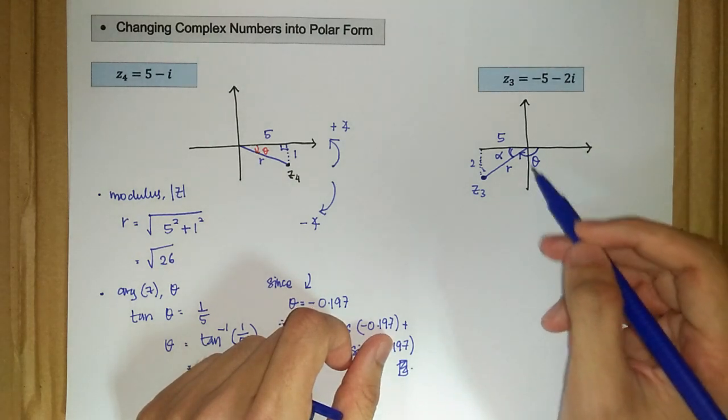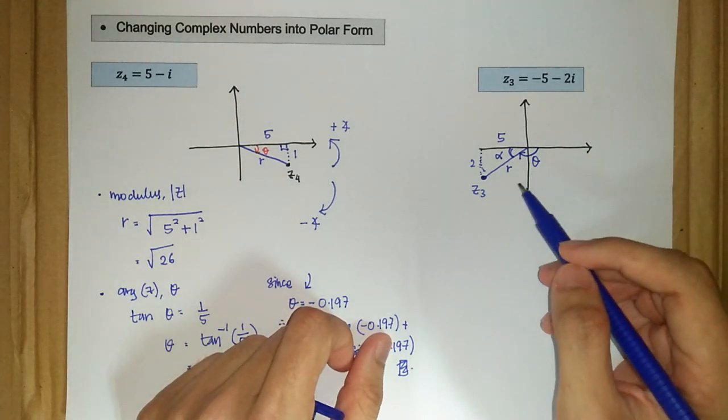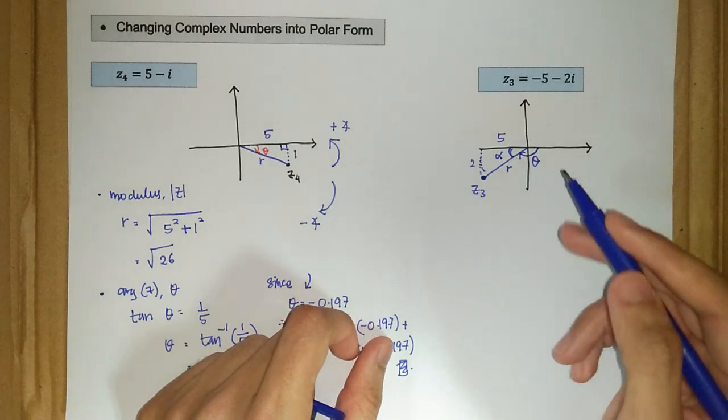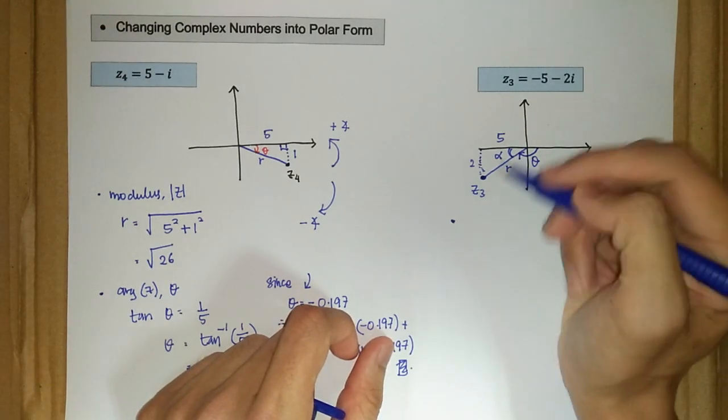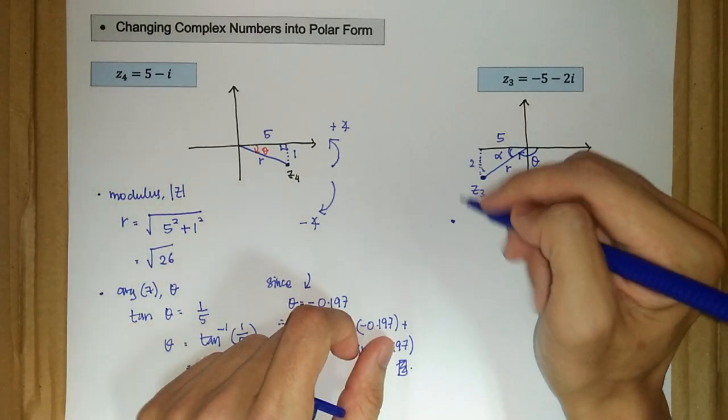And not to confuse with this one, I will name it as the alpha, the angle alpha. So theta argument, our argument is just 180 minus alpha here. So first let's calculate our modulus.